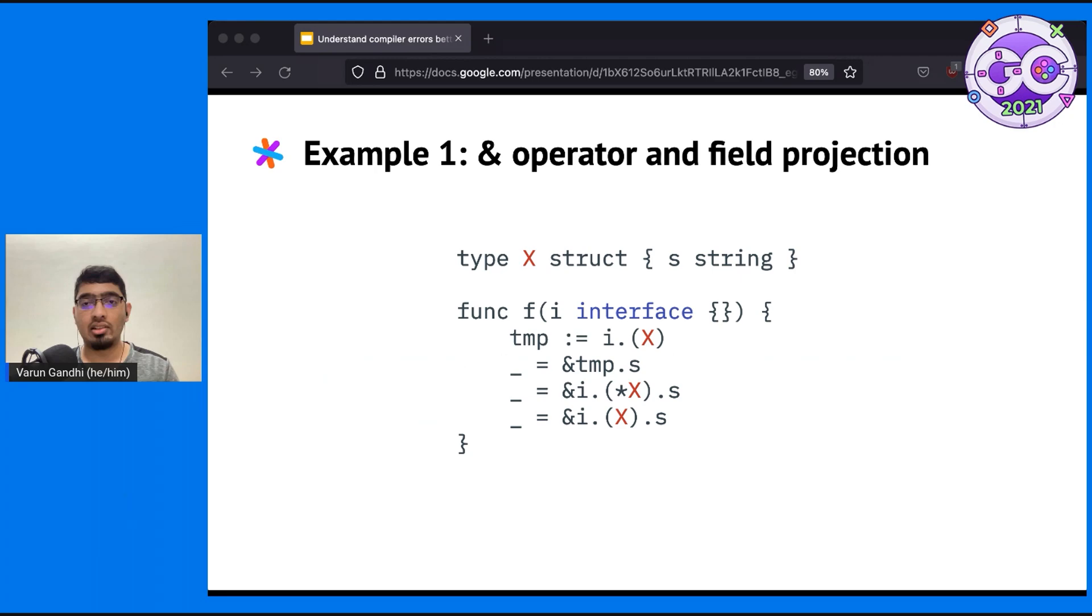Consider the following example code. I've declared a struct X with a single string field S and I'm trying to get a pointer to the field in various ways in the function F. Which of these lines do you think will result in a compiler error? I will wait for 10 seconds in case you want to think about it before I reveal the answer.